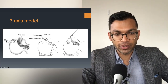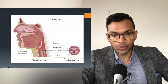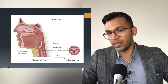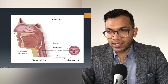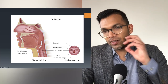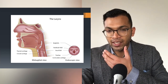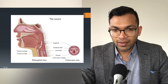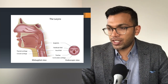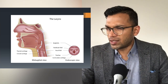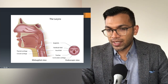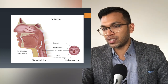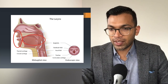With intubation you need to make all three axes line up to get a view and place the tube correctly. Think about the predictors of difficult bag mask ventilation using the anatomy: you need a seal — a beard is bad, a floppy face in elderly patients, edentulousness (no teeth means no structure). OSA is probably the most common issue due to excess soft tissue, or a tumour in the oropharyngeal area. Finally, severe restrictive lung disease or obesity makes ventilation harder.